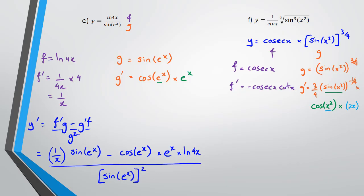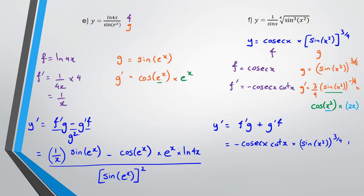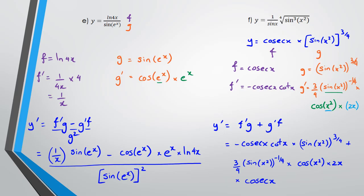It's an extremely nasty function. Putting it all together: y' = f'g + g'f. So that's (−cos(x)cot(x)) × (sin(x²))^(3/4) plus (3/4)(sin(x²))^(−1/4) × cos(x²) × 2x × cot(x). I'm not going to simplify it — just leaving it as it is. Not a pretty equation.